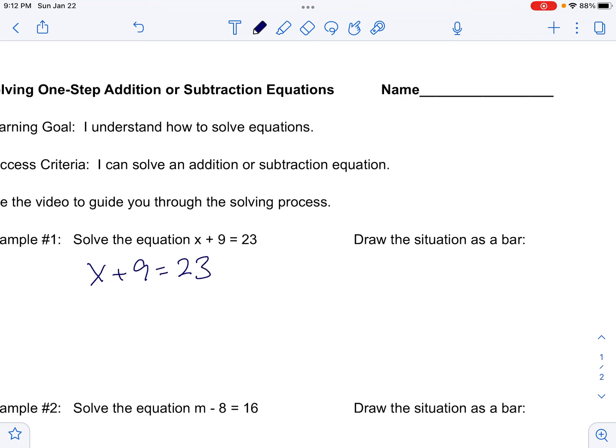I'm going to draw a bar to describe the situation. What I'm looking at here is like I have a piece of material, a bar, and it has two parts to it: an unknown part and a piece that's 9 long, and the total length is 23. If you're trying to figure this out looking at the bar, you take 23 minus 9, which would be 14.